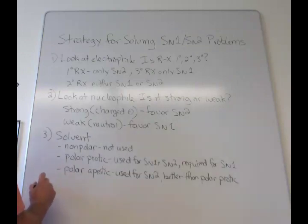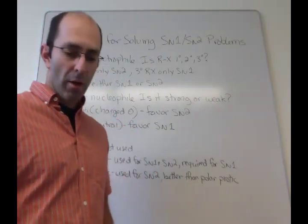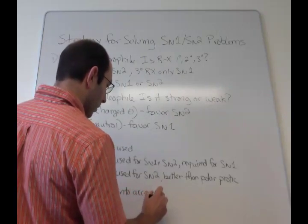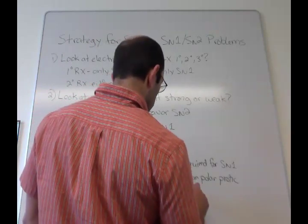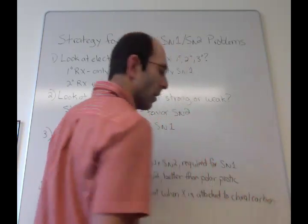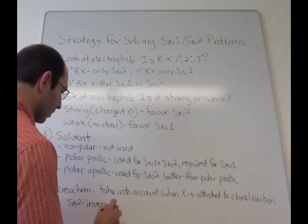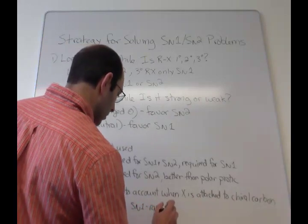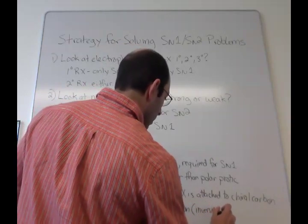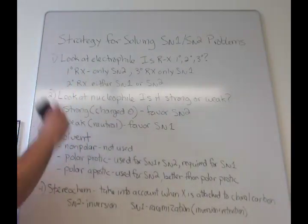And then the final thing is just stereochemistry. Just don't forget to worry about stereochemistry when you're writing out the structure of the products. So the key here is just to take this into account when X is attached to a chiral carbon. And again, just to review what we talked about on Wednesday, for SN2, we are always going to get inversion. And for SN1, we're going to get racemization, which is both inversion and retention. So let's just end by doing two examples just to highlight this strategy.